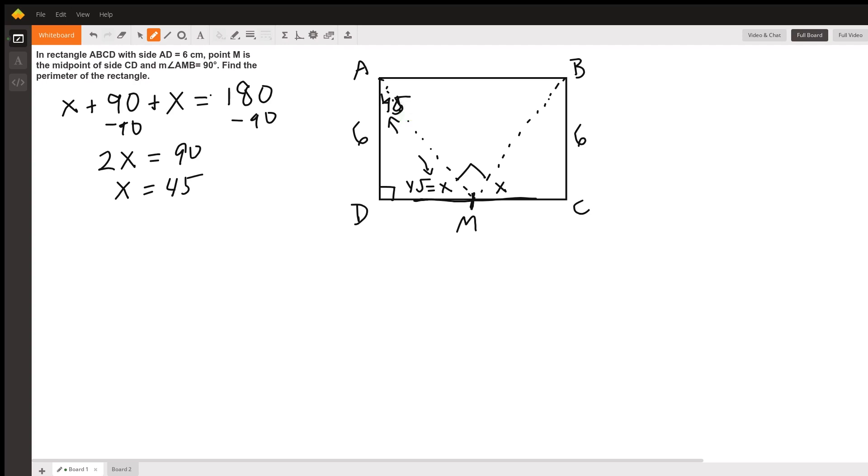If you know special right triangles, this is now a 45-45-90 triangle, which means that both sides that are adjacent to the 45 and 90 degree angle are the same, which means this side is now 6.